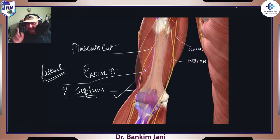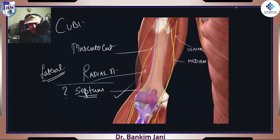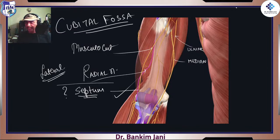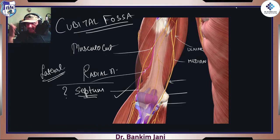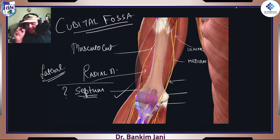Do remember that at the elbow — the cubital fossa — the radial nerve will be sitting exactly anterior from this point onwards. For the medial side, the median nerve is taking over all the way. So now only two nerves are traversing for the forearm: median and radial. Remember, ulnar goes posterior. The musculocutaneous nerve supplies biceps brachii, coracobrachialis, and brachialis.